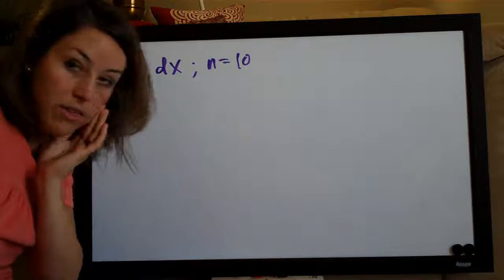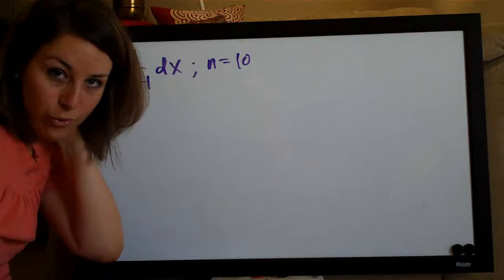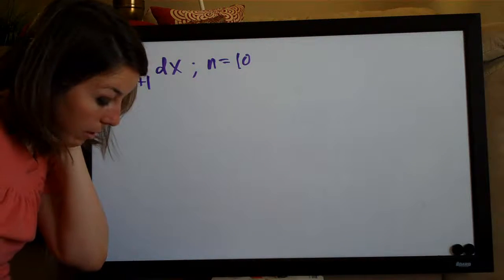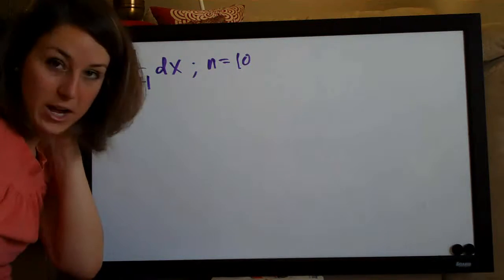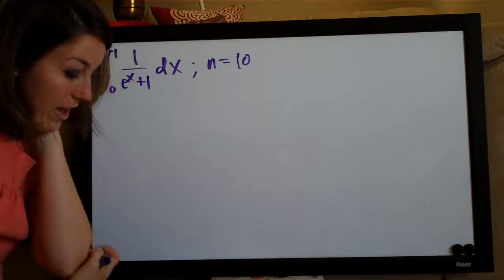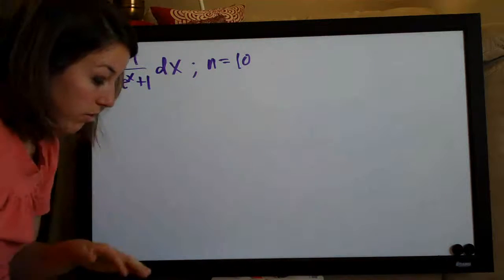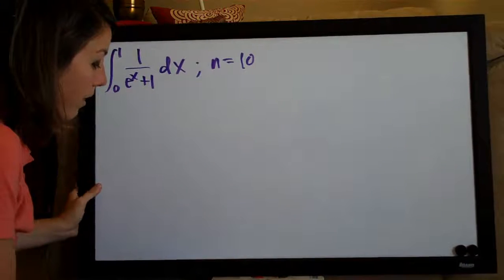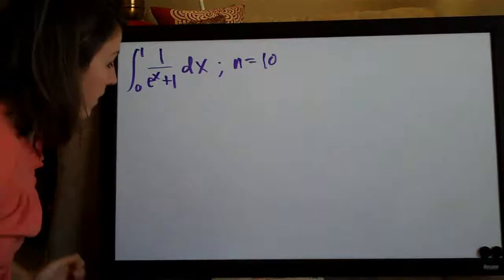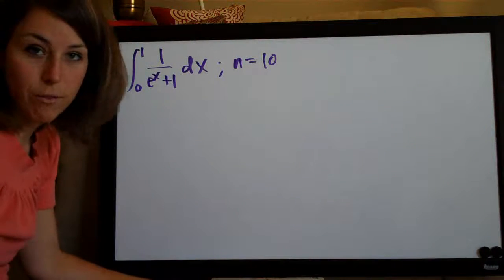I wrote down the formula for the trapezoidal rule in the last video but I think it's so ridiculous that I find it unnecessary to actually write it down. I think it causes more confusion than anything. So I'm not going to actually write down the whole formula, I'm just going to go through how to solve the problem.